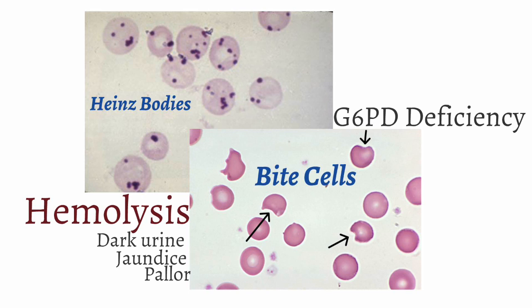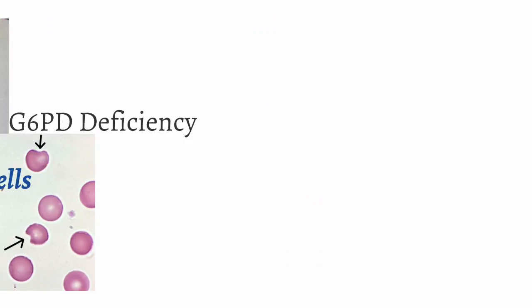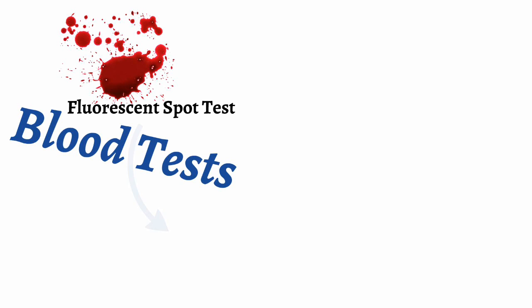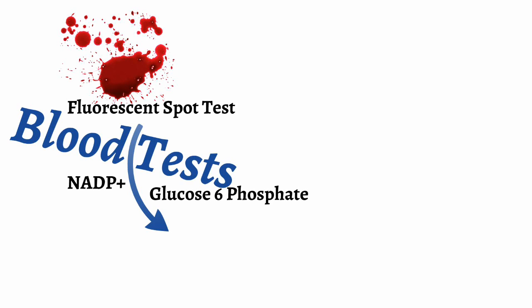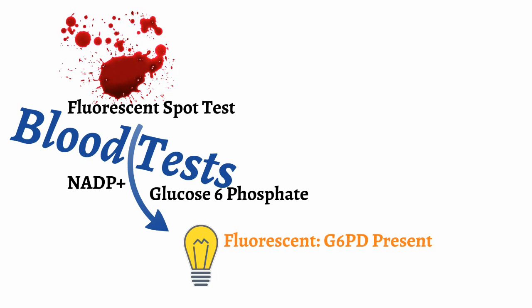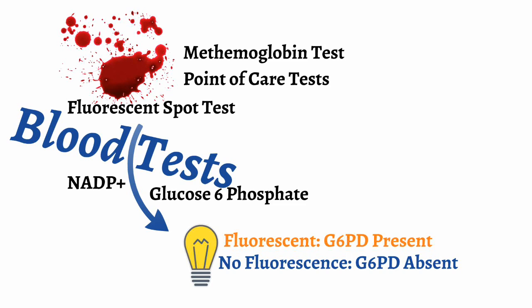There are lab tests that can help as well. The simplest test to diagnose G6PD deficiency is the fluorescent spot test, and it is the most sensitive test. Blood of the patient is added to solutions of NADP+ and glucose-6-phosphate. If the RBCs have enzyme present, the NADP will be converted to NADPH, and the solution will glow under UV light due to special tags that recognize NADPH. If the solution does not fluoresce, then there is glucose-6-phosphate dehydrogenase deficiency. Other tests include the methemoglobin test and certain point-of-care tests that can be used in the clinic.